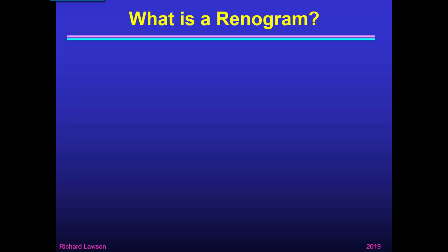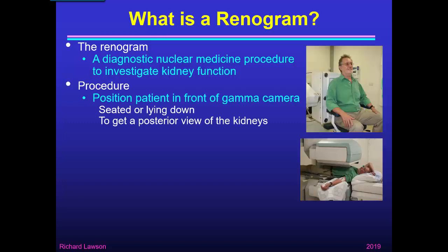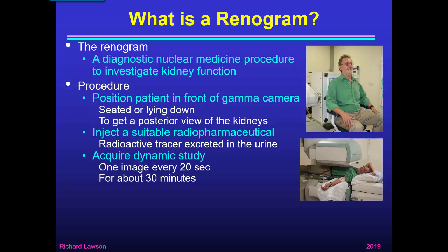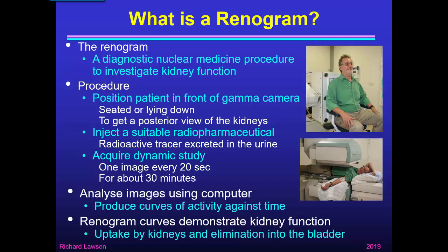The renogram is a diagnostic nuclear medicine procedure to investigate kidney function. It's performed by positioning the patient in front of a gamma camera — they may be seated or lying down — to obtain a posterior view of the kidneys. We inject a suitable radiopharmaceutical, a radioactive tracer excreted through the kidneys into the urine, and acquire a dynamic study with the gamma camera, typically one image every 20 seconds for about 30 minutes. We then analyse these images using a computer to produce curves of activity against time.